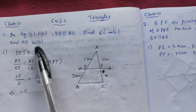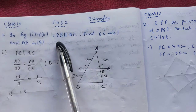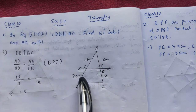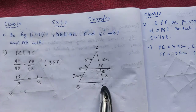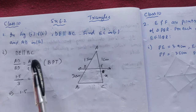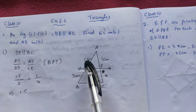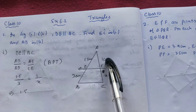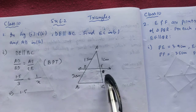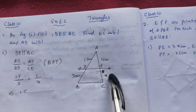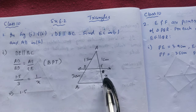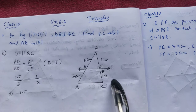What is given in the question? In this triangle, DE is parallel to BC. They've given the value 1.5, this is 1, this is 3, and this is unknown — we're going to find it, so we're just taking it as X.